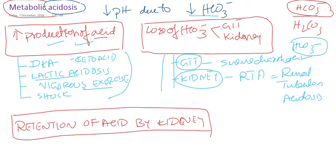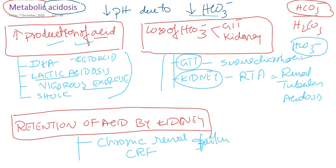Another cause is retention of acid by the kidney. This occurs in chronic renal failure or nephritis, where acids are not secreted properly. These are the main reasons for metabolic acidosis.